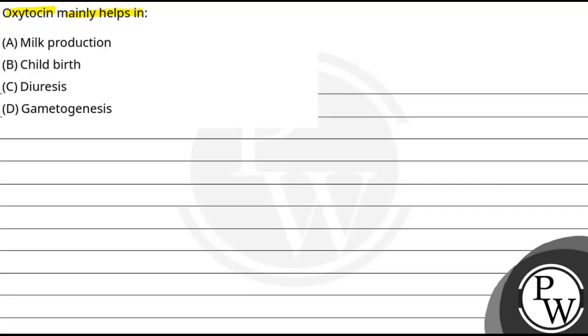The options are: A) Milk production, B) Childbirth, C) Diuresis, and D) Gametogenesis.